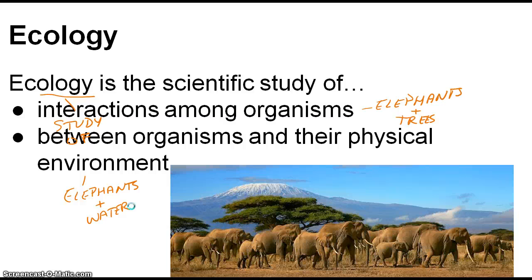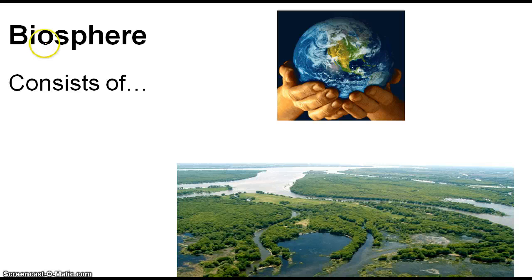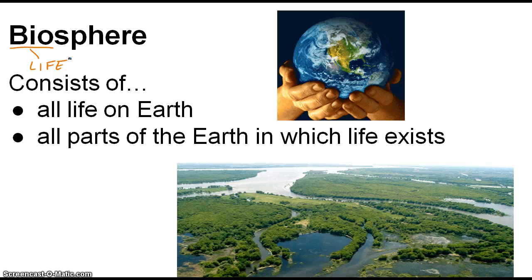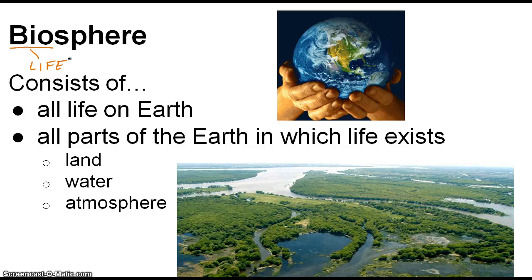That's ecology. Now we're going to look at what biosphere means. Biosphere also has a root word we already know — 'bio' means life. The biosphere consists of a couple of things: number one, it consists of everything that is living on planet Earth — all plants, animals, bugs, bacteria, anything that is living on Earth is part of our biosphere. It also consists of all the parts of the Earth that aren't living, such as the actual land, the water, and the atmosphere. All those things are not living, and yet all life on Earth depends on them and is affected by them.